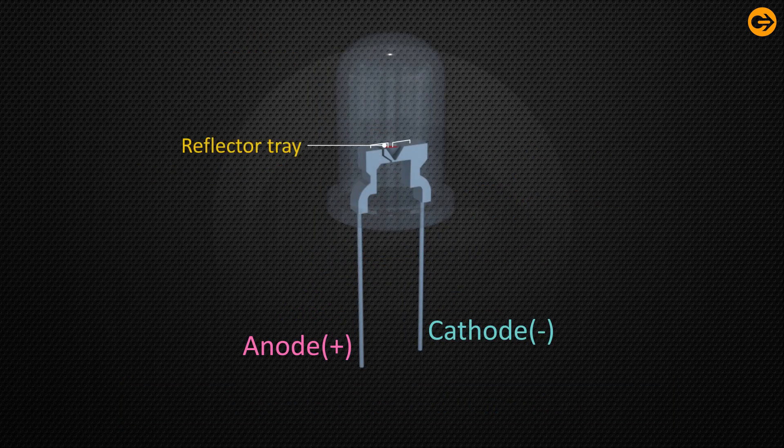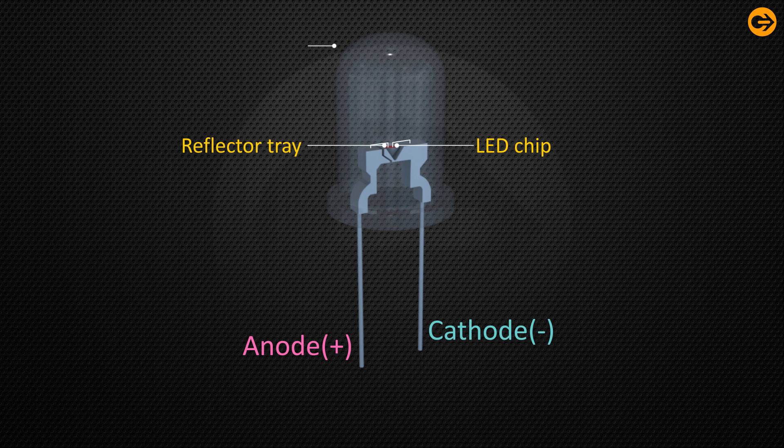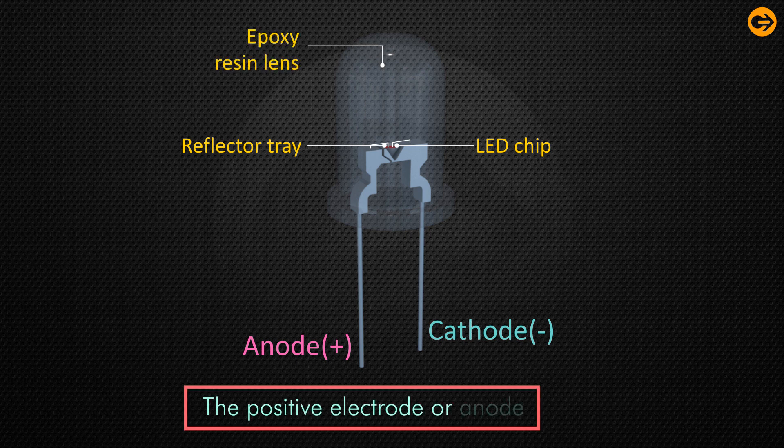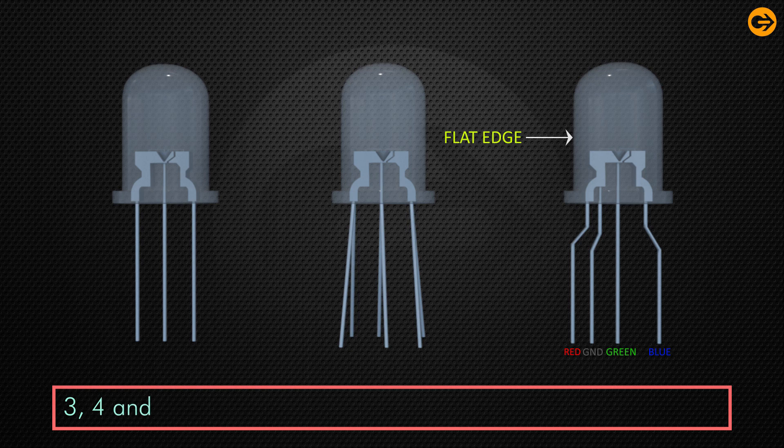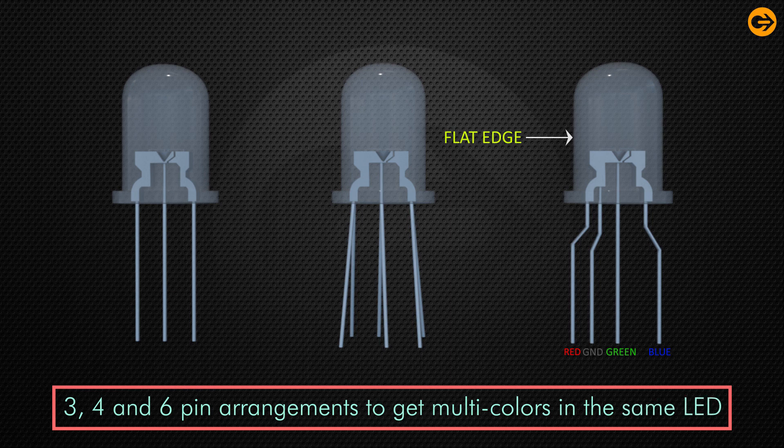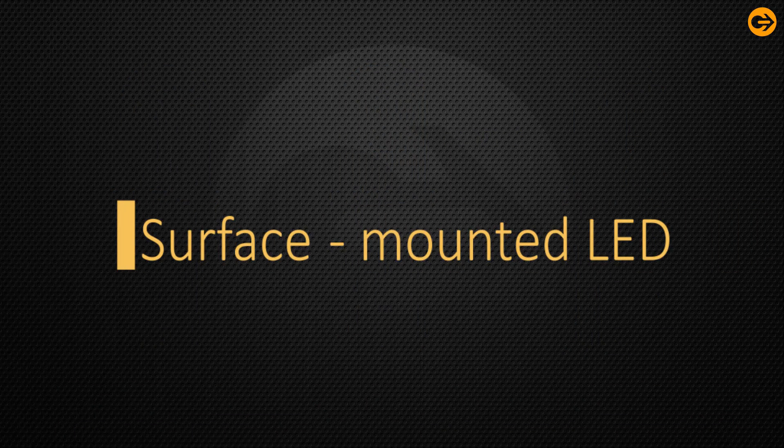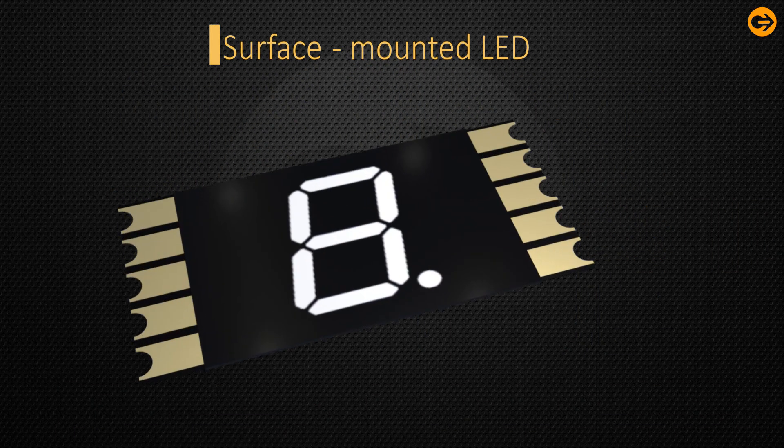The larger leg of the LED signifies the positive electrode or anode. Now LEDs with more than two legs are also possible, such as three, four, or six-pin arrangements to get multicolors in the same LED package. Surface mounted LED displays are available that can be mounted on the PCBs.